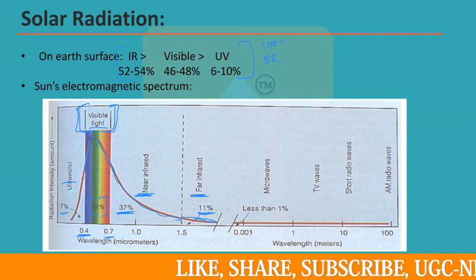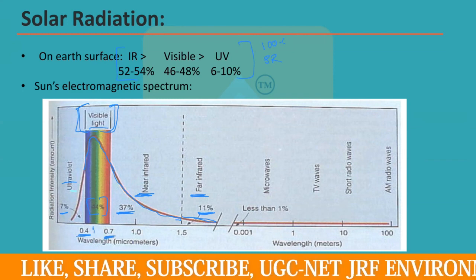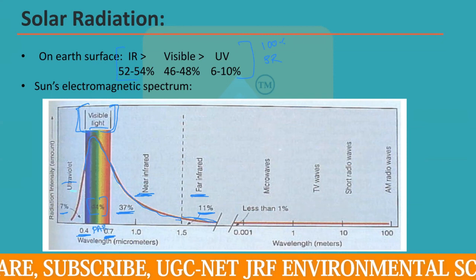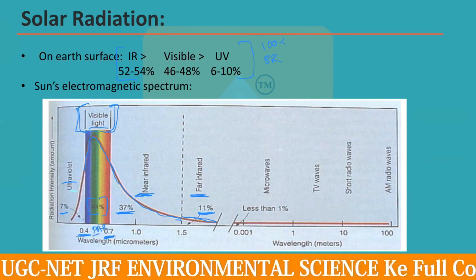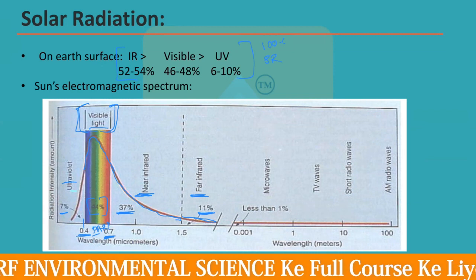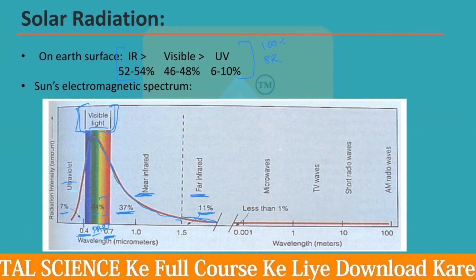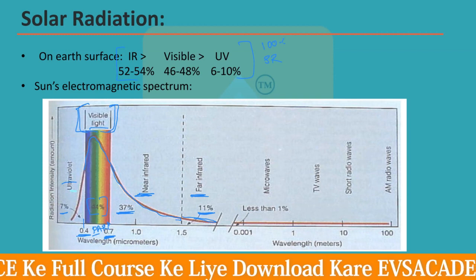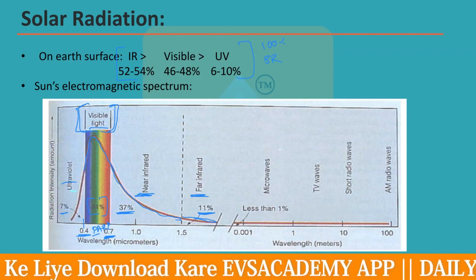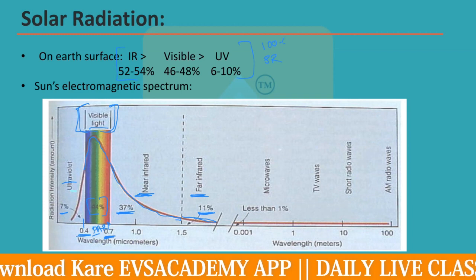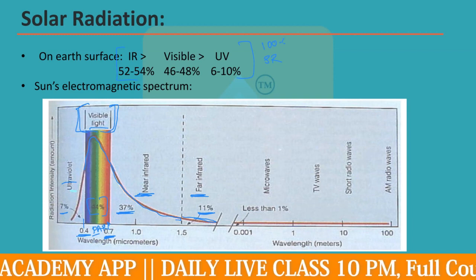The range 0.4 to 0.7 micrometers — more precisely 0.38 to 0.72 micrometers — is called PAR light, or Photosynthetically Active Radiation. Only this range of radiation can be used as an energy source for photosynthesis.